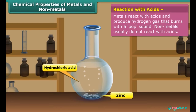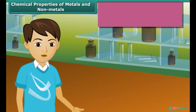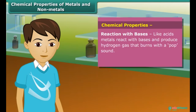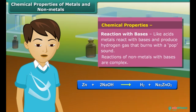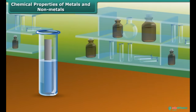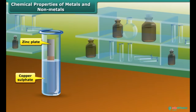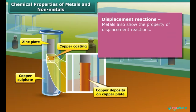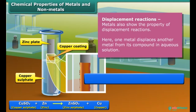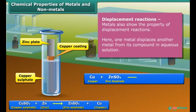Now let's know about the reaction of metals and non-metals with acids. Metals react with acids and produce hydrogen gas, while non-metals don't react with acids. Non-metals react with bases. Besides these chemical reactions, metals also show the property of displacement reactions, where one metal displaces another metal from its compound.